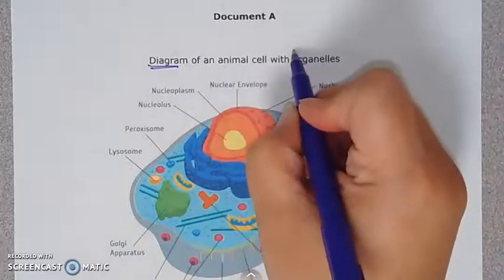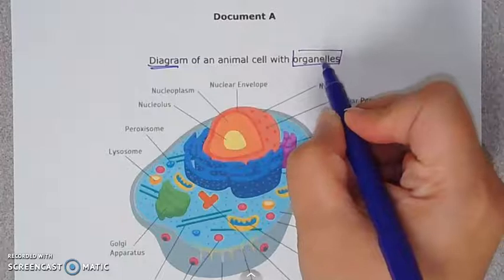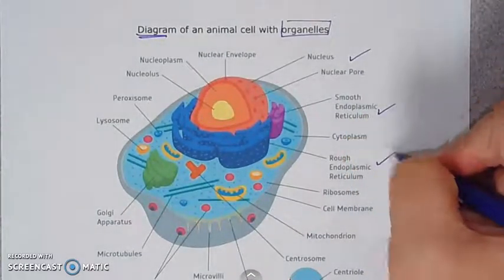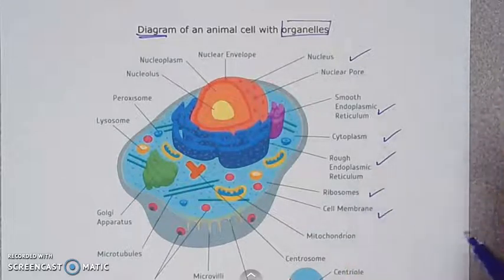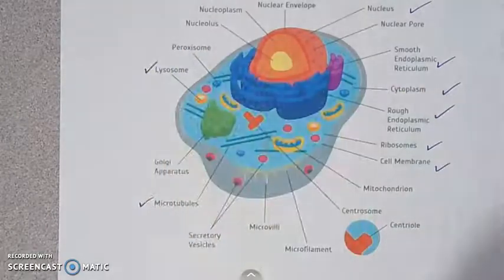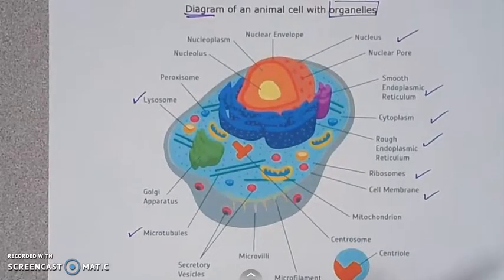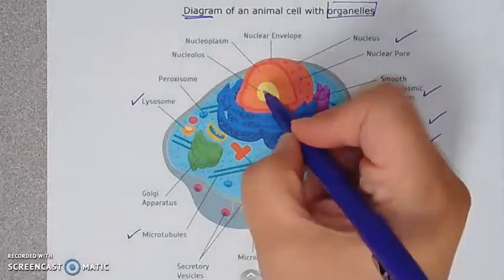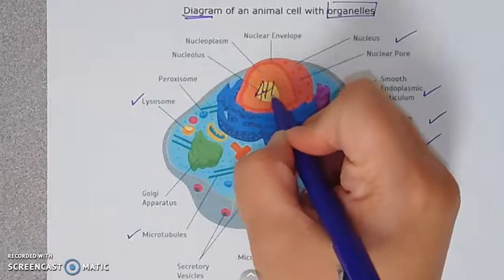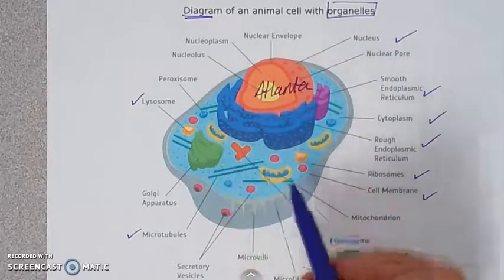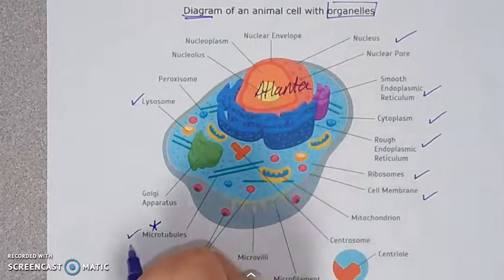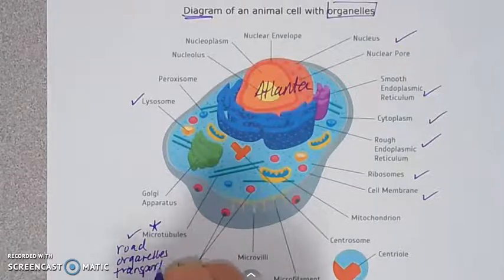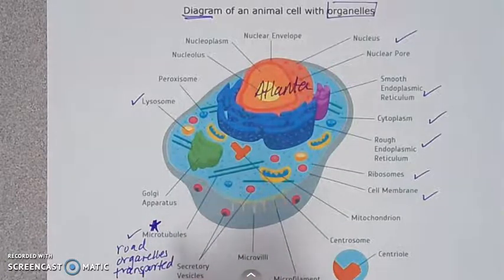Document A is a diagram of an animal cell with organelles. Great news — if you didn't know the organelles, this illustration tells you what they are. I can identify nucleus, endoplasmic reticulum, cytoplasm, ribosomes, cell membrane, microtubules, and lysosomes. They said to think of the cell like a city, so I'm thinking the nucleus center is like Atlanta's center. I notice that microtubules act like roads where organelles are transported — that would be a really good choice for my essay.